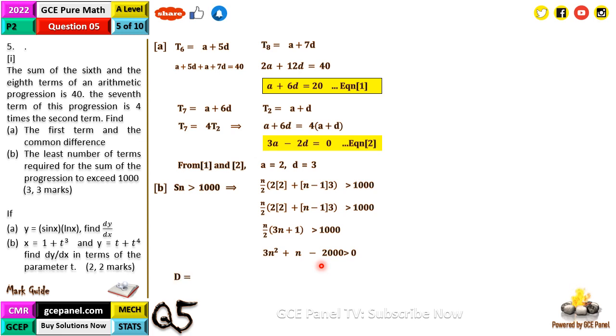So that gives us a quadratic inequality with 3n squared plus n minus 2000 is greater than 0. And from here, you can calculate our discriminant which gives us 24001. So from here, n is greater than 26. So since n is greater than 26, our n should be equal to 27. So that's the least number of terms that should give us a sum that exceeds 1000.